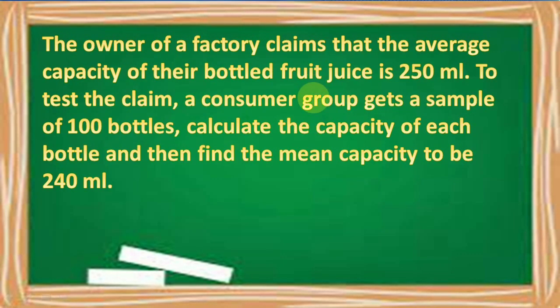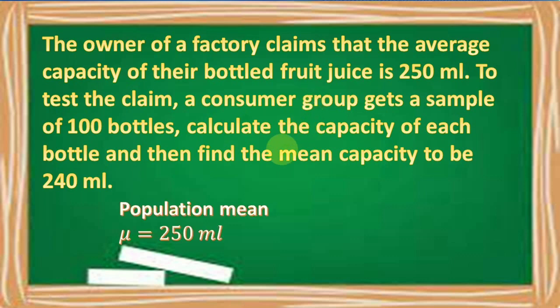Let's have this next example. The owner of a factory claims that the average capacity of their bottled fruit juice is 250 ml. To test the claim, a consumer group gets a sample of 100 bottles, calculates the capacity of each bottle, and finds the mean capacity to be 240 ml. So, our population mean, or mu, is equal to 250 ml. And our sample mean, based on the computed capacity of each bottle, is equal to 240 ml.